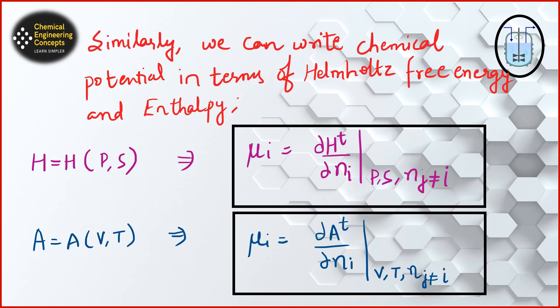Similarly, we can write chemical potential in terms of Helmholtz free energy and enthalpy. For enthalpy, we take pressure and entropy as constant. For Helmholtz free energy, we take volume and temperature as constant.